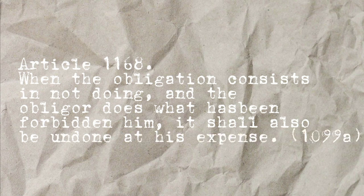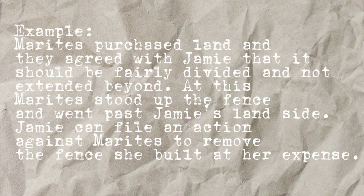Article 1168: When the obligation consists in not doing and the obligor does what has been forbidden him, it shall also be undone at his expense. It means if the obligor breaks the prohibition, it must be fixed at the obligor's expense when the requirement is to keep from doing something. For example, Marites owns land and they agreed with Jimmy that it should be fairly divided and not extended beyond. Marites put up a fence and went past Jimmy's land side. Jamie can file an action against Marites to remove the fence she built, at her expense.